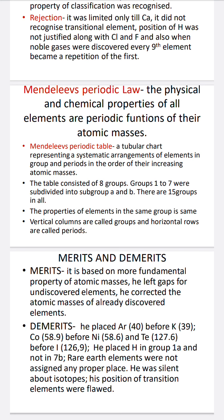The demerits of Mendeleev's periodic table: argon has an atomic mass of 40 and potassium has 39, so logically potassium should be placed before argon — but Mendeleev placed argon before potassium and could not justify it. Similarly, he placed cobalt before nickel and tellurium before iodine without justification. He also placed hydrogen in Group 1A with metals rather than with non-metals.